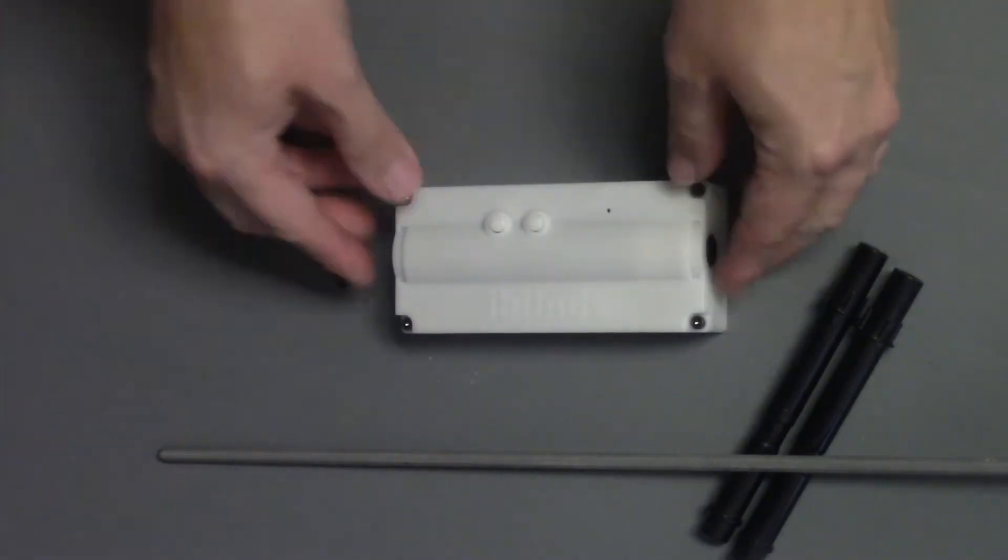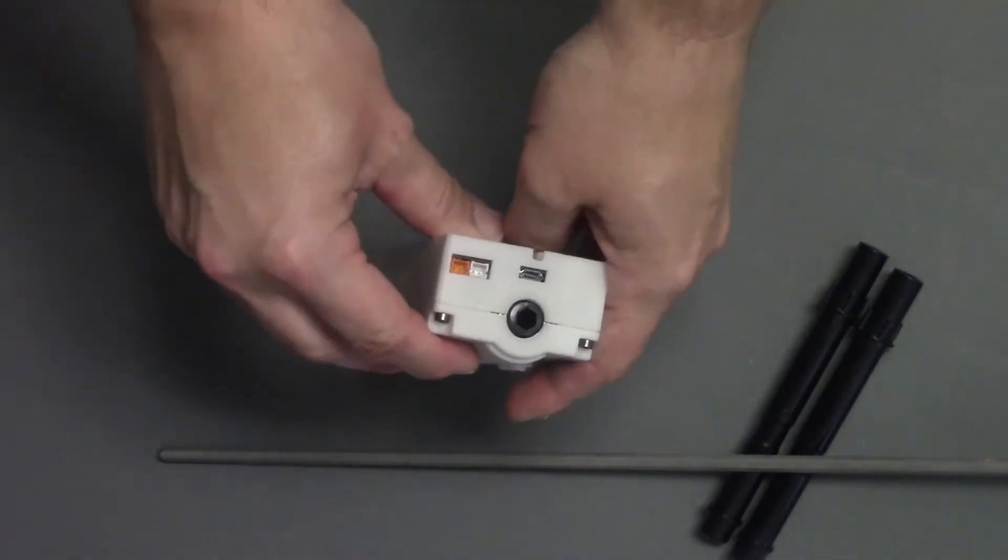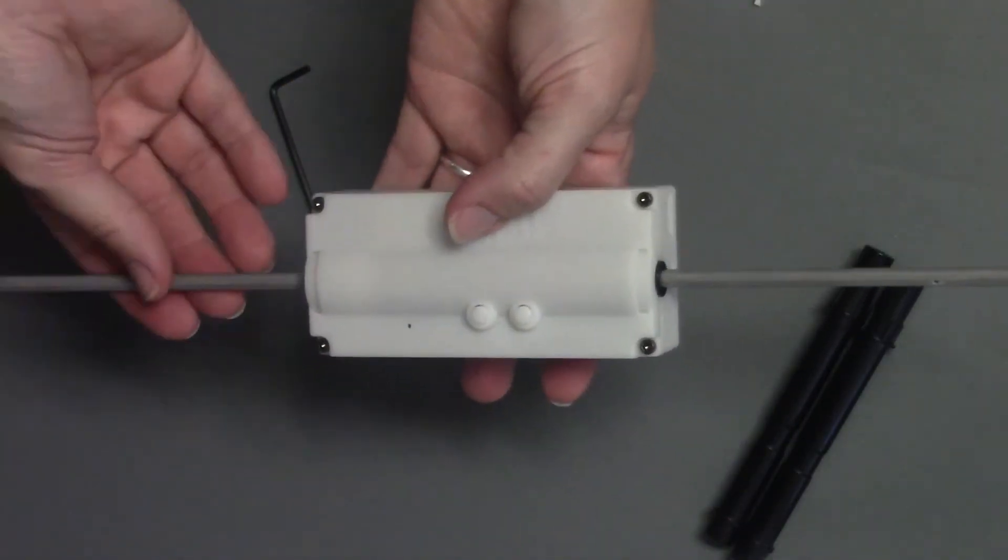You have now successfully changed out your tilt shaft and can proceed with the iBlinds motor installation. Please refer to the quick start guide for instructions.